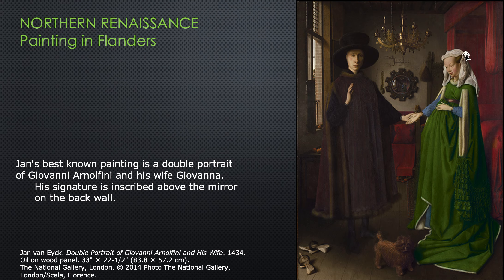The mirror in the back — I'll show the detail later. The dog in the foreground represents fidelity: a dog is faithful to his master, so dogs often appear around spouses because it represents faithfulness of one to the other — and a wish for that. The joining of their hands represents marriage across class lines, where I believe he's the merchant and she might be a little higher class. There are apples sitting on the window, which represent the garden of Eden.